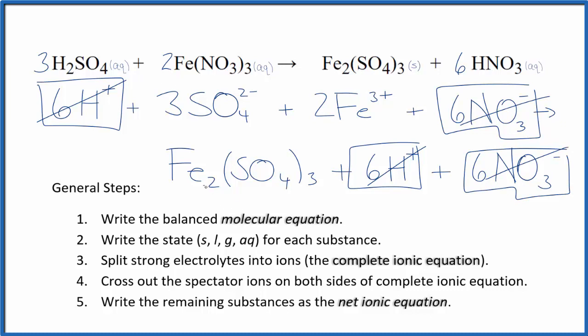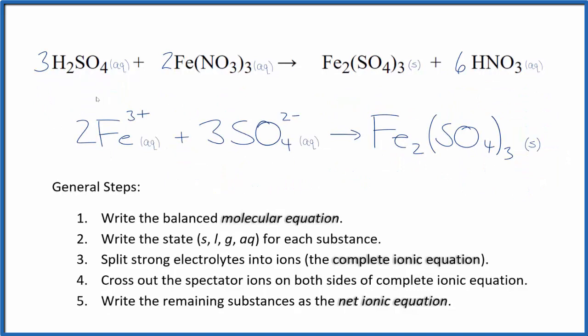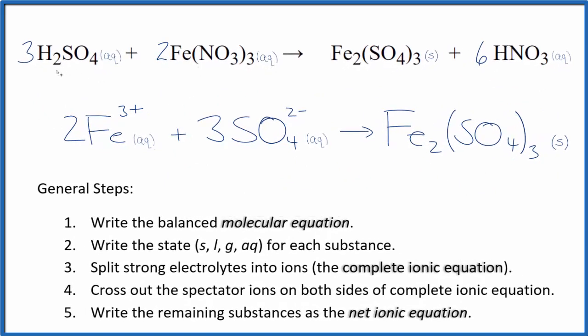What's left is the net ionic equation for H2SO4 plus Fe(NO3)3. Let me clean this up and write the states. We'll have our net ionic equation. This is the balanced net ionic equation for sulfuric acid and iron(III) nitrate.